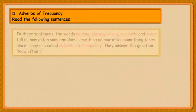In these sentences, the words seldom, always, rarely, regularly and twice tell us how often someone does something or how often something takes place. They are called adverbs of frequency. They answer the question: How often?